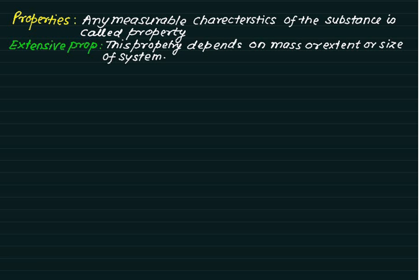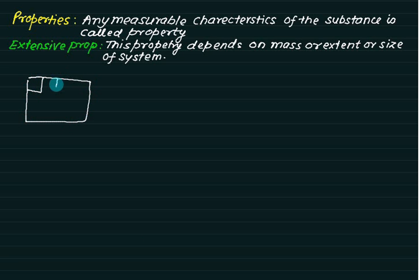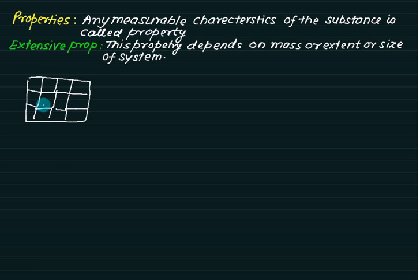The extensive property is also equal to the sum of individual properties. If we consider one large section and compute the mass of each part — this part plus this part plus all parts — then if the sum of the masses of all these parts equals the total mass, that property is called an extensive property.